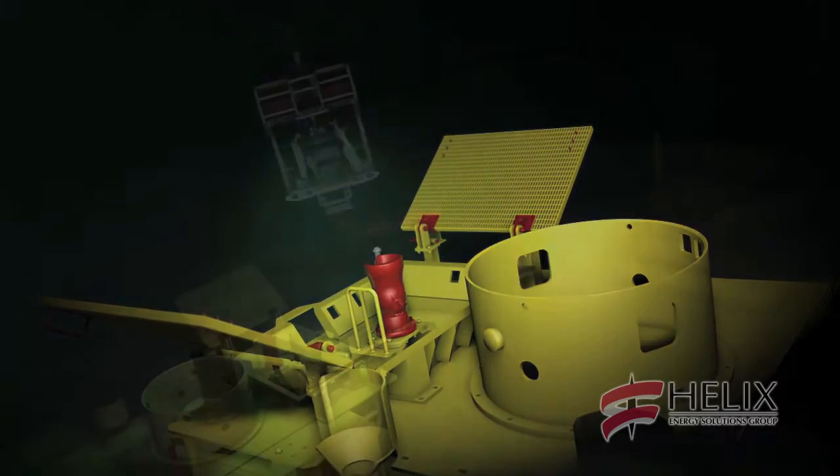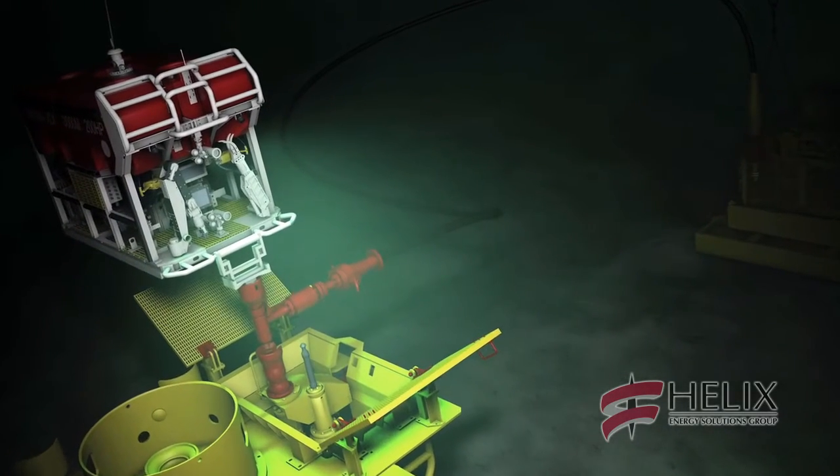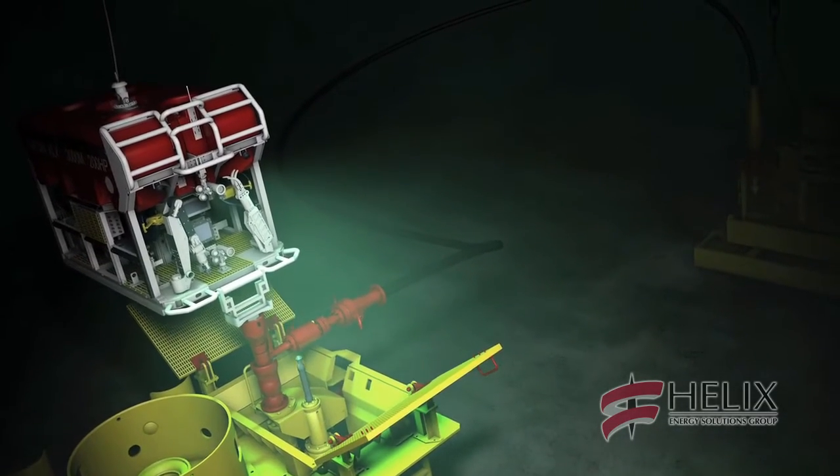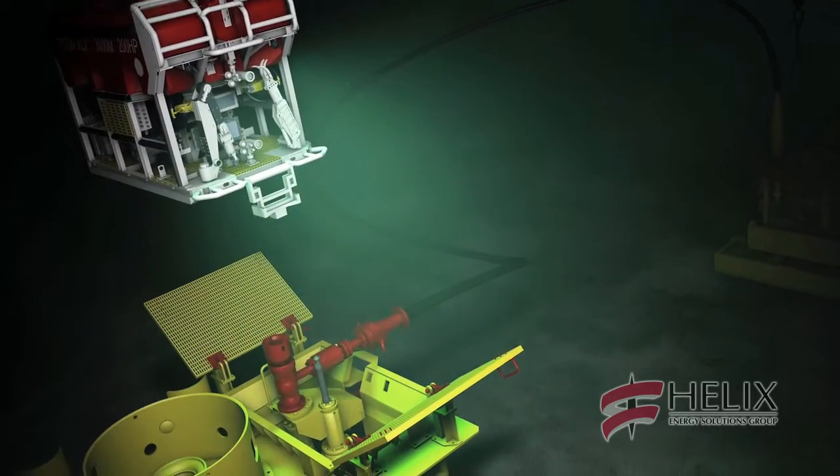An SMIS Subsea Injection Skid is then deployed from the vessel and landed adjacent to the well. It is connected to the Mars Temporary Injection Insert via a flexible jumper.